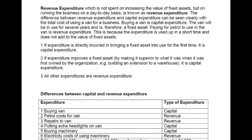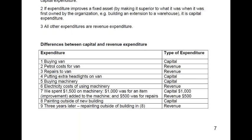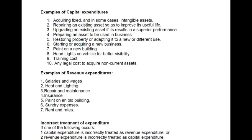Capital expenditure increases the value of a non-current asset, while revenue expenditure maintains the value of a non-current asset. Capital expenditure is non-recurring, whereas revenue expenditure is recurring — incurred on a daily, weekly, or day-to-day basis.